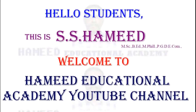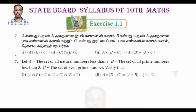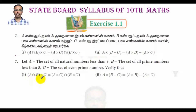Hello students, this is S.S.A.S.A.M.A.D. Welcome to Hamidh Educational Academy YouTube channel. Sum number 7: Let A be equal to the set of all natural numbers less than 8, B be equal to the set of all prime numbers less than 8, C be equal to the set of even prime numbers. Verify that: (1) A ∩ B × C = (A × C) ∩ (B × C), and (2) A × (B - C) = (A × B) - (A × C).